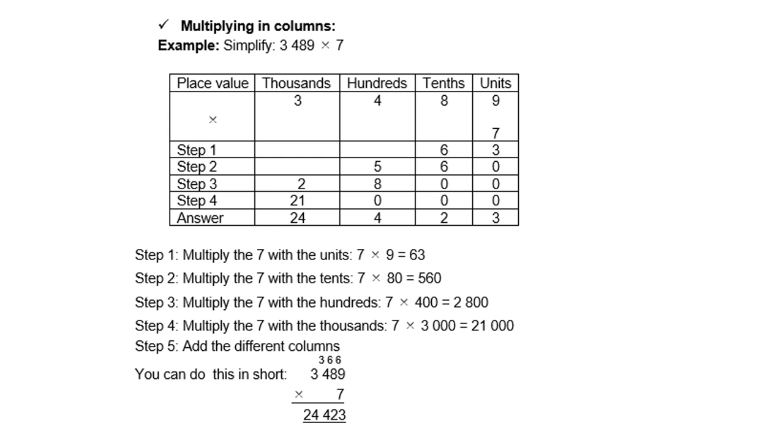However, there is a shorter way of doing it where you multiply in columns. You start with 9 times 7, which is 63. Write down the 3 and carry the 6. 7 times 8 is 56, plus the carry 6 is 62, carry 6.